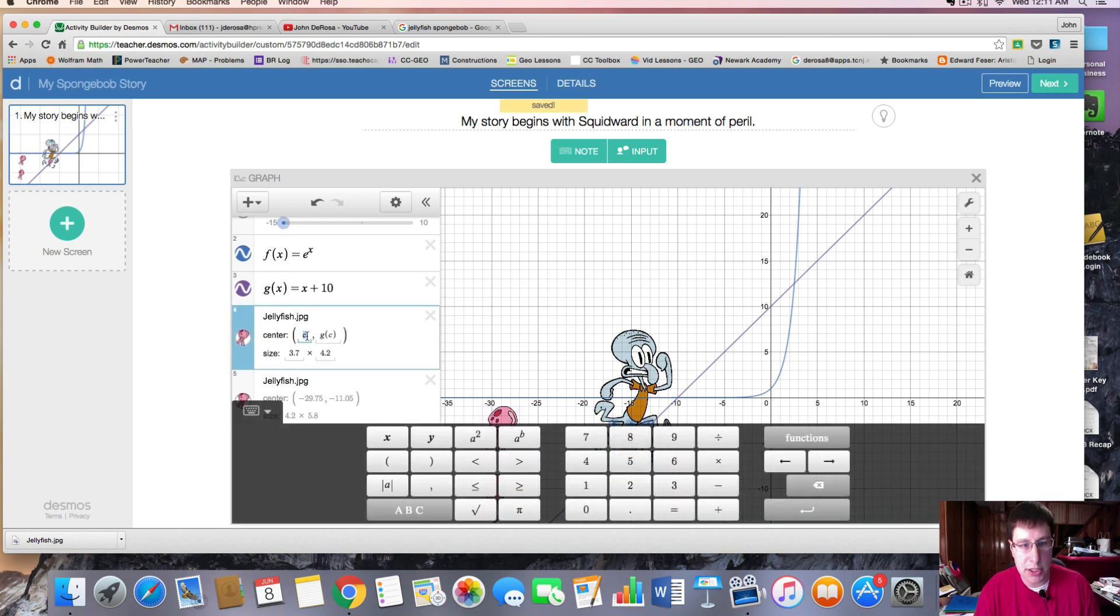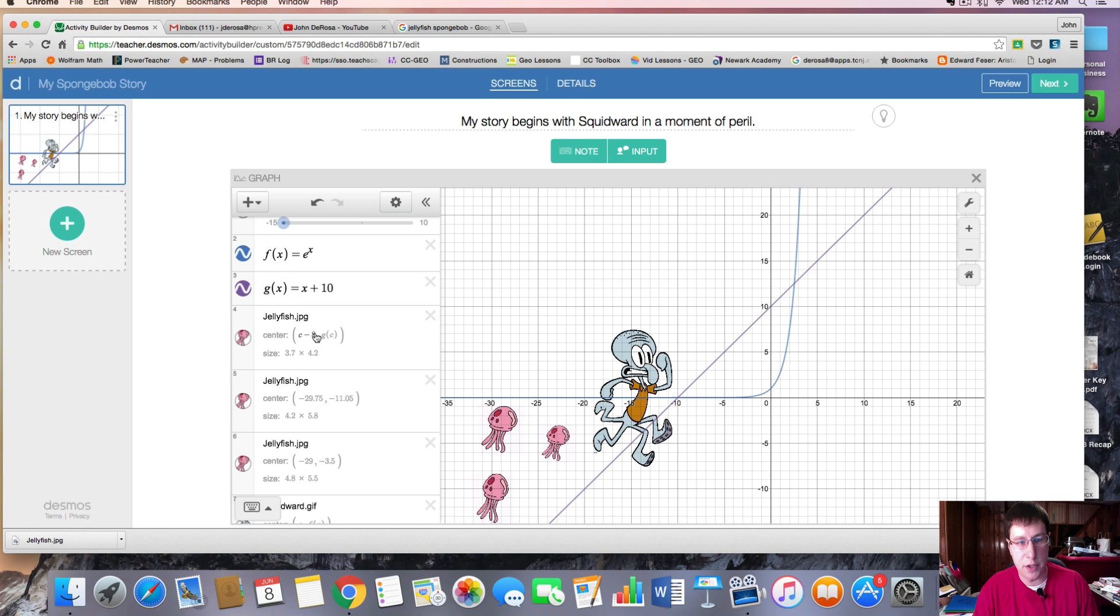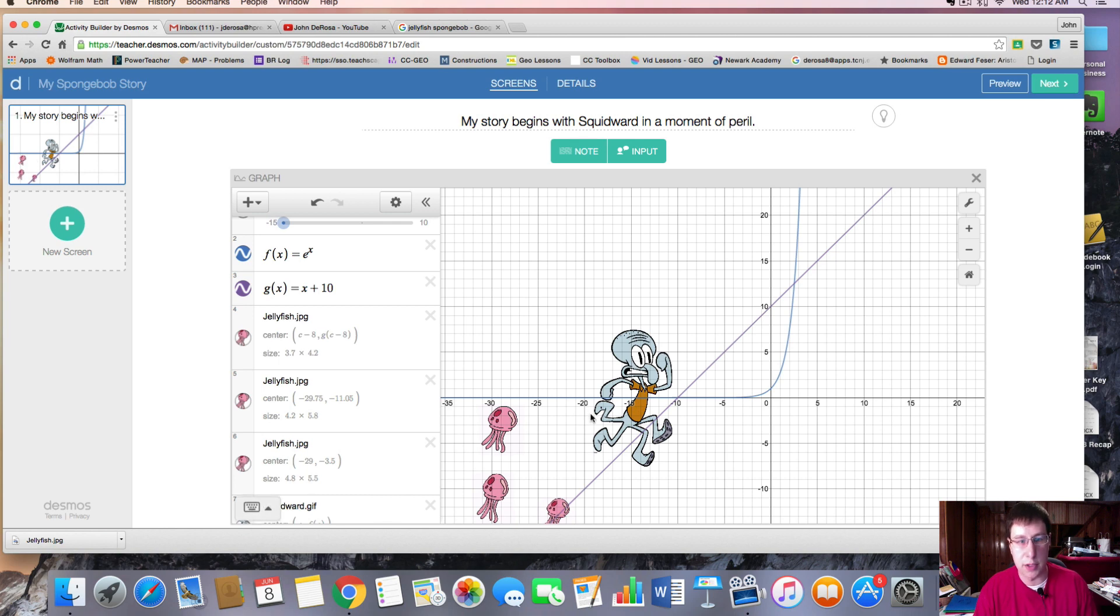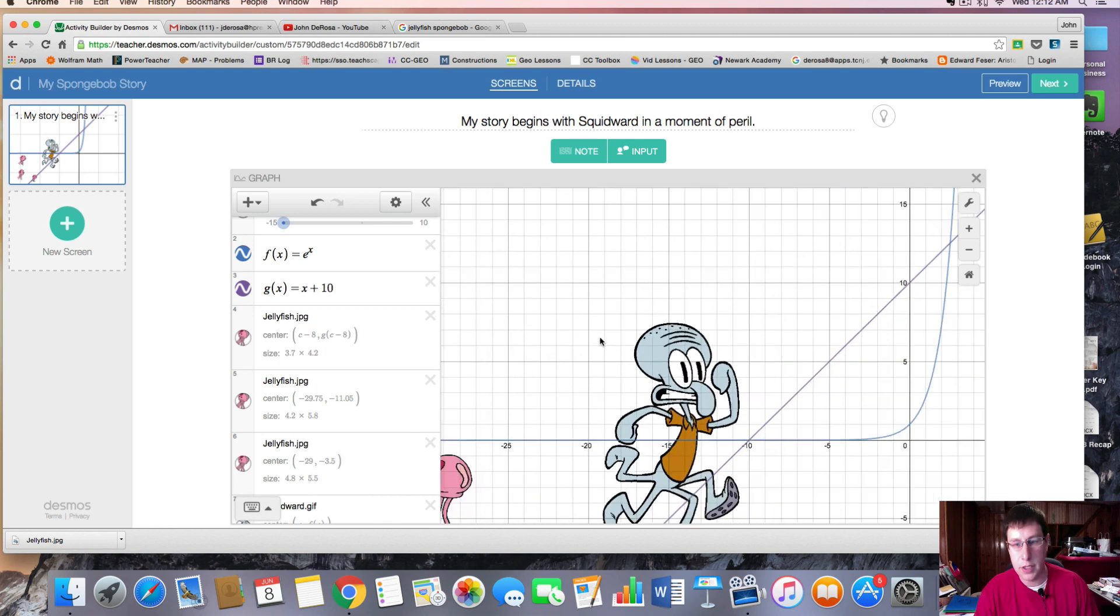So see where it's c here? What expression will allow us to move to the left? Well, let's subtract a few units. Let's subtract, say, 8. OK, and that'll move it to the left. But if we want it to line up with the function that we used, we want the input to match the output. So if c minus 8 is the input, then we need to put c minus 8 in the parentheses there for it to move along this line. And then we have our jellyfish.